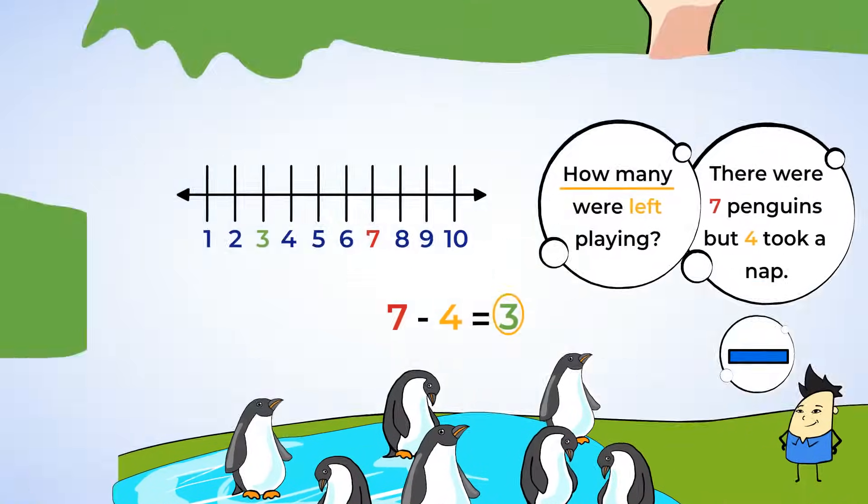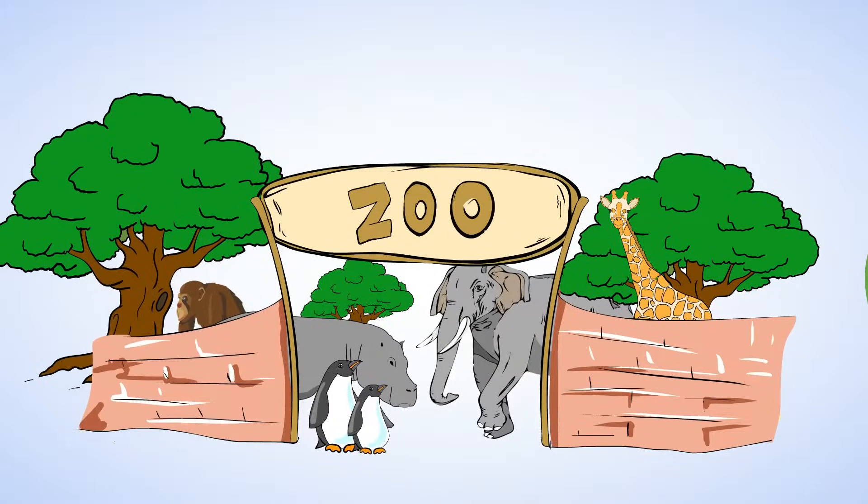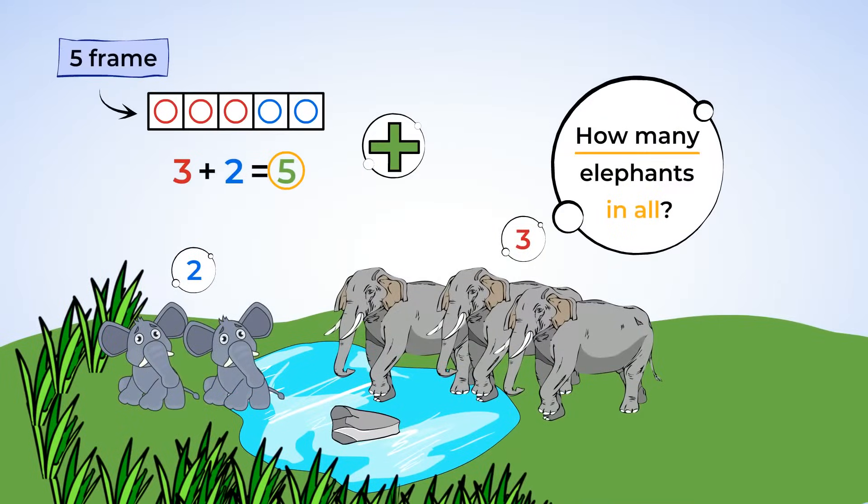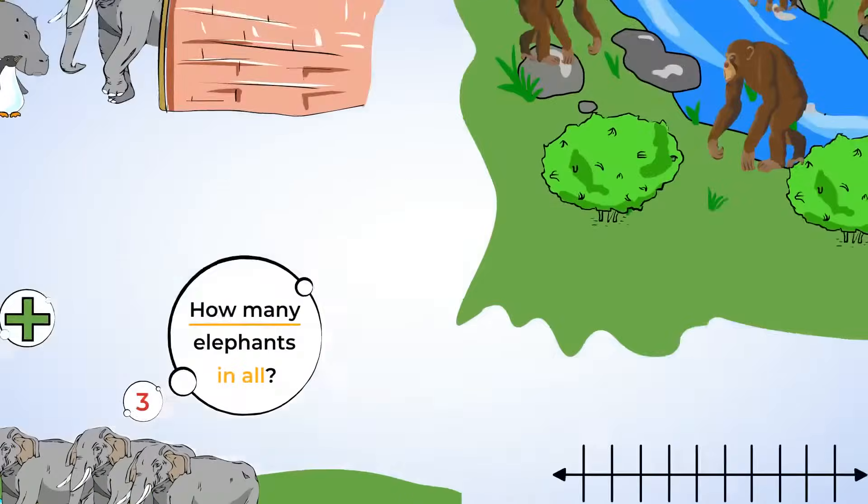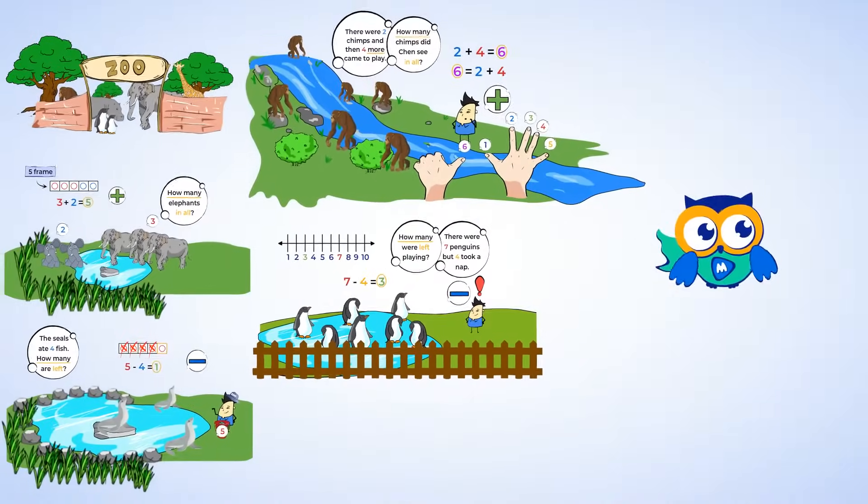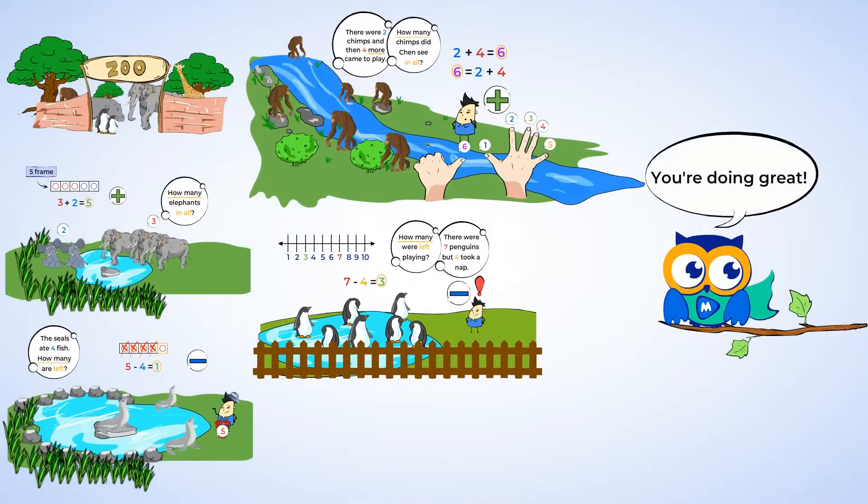Amazing work. We solved so many math problems together at the zoo. We looked carefully for words and hints at the story to figure out if we needed to add or subtract. Then, you used lots of different ways to add and subtract. A five frame, your fingers, and a number line. Keep practicing, mighty scholar. You're doing great.